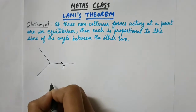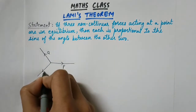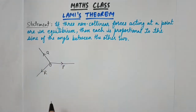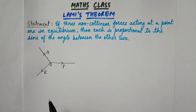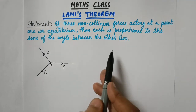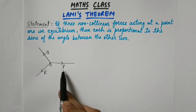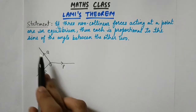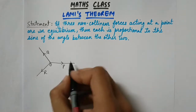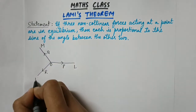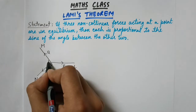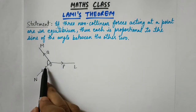Let this force be P, this force be Q, and this force be R. These are the three forces acting at a point O, and they are in equilibrium. We need to prove that each force is proportional to the sine of the angle between the other two. To name the angles, let us label points L, M, and N. For force P, the other two forces are Q and R, and the angle between them is angle MON.